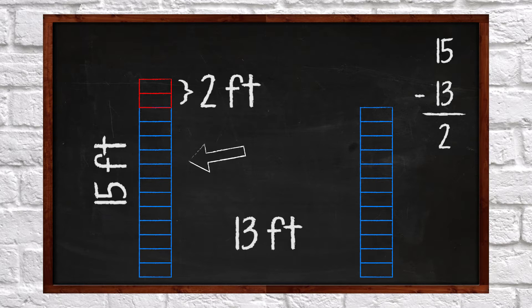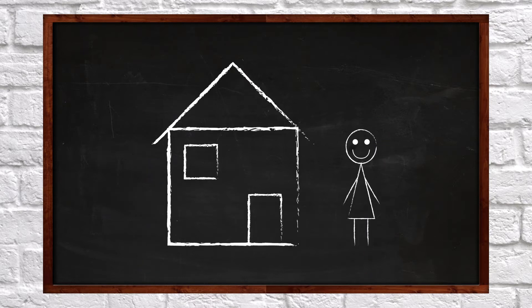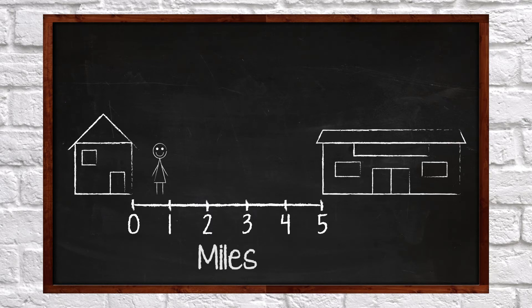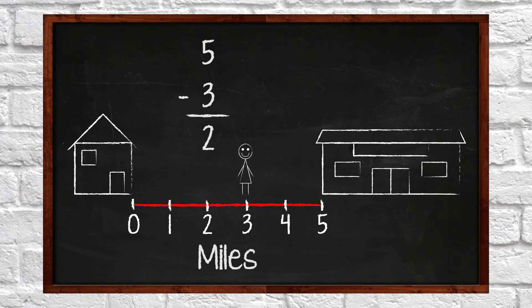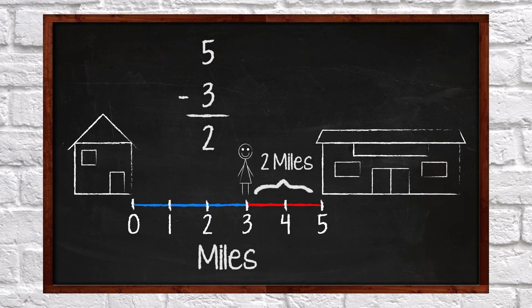This wall is two feet taller than this wall. Here is one more example of using subtraction to compare two things. Joanne is at home. The library is five miles away. If Joanne walks three miles, how many more miles does she need to walk? You can subtract to find the answer. Five minus three equals two. If Joanne needs to walk five miles and she has so far walked three miles, then she has two more miles left to walk.